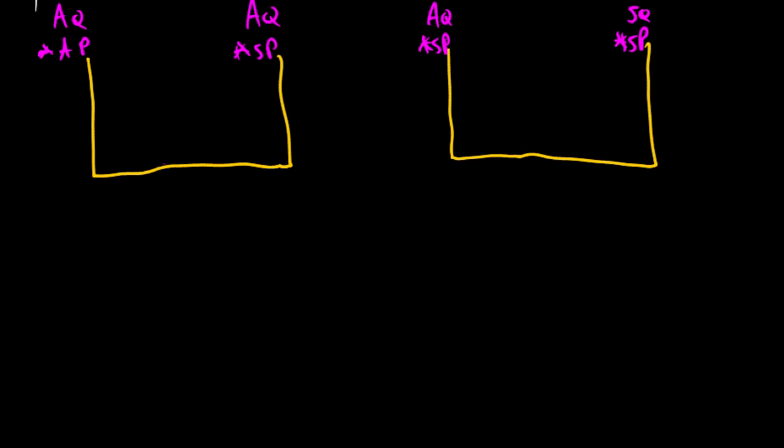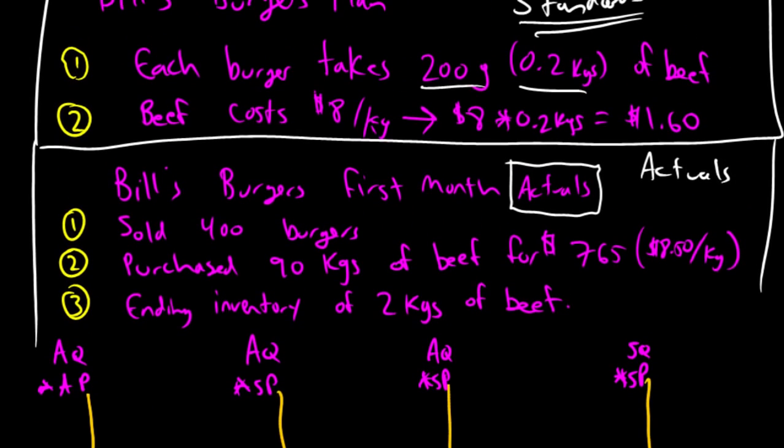Now, what do these stand for? AQ stands for actual quantity, as in actual quantity of direct materials. So, this is always going to be measured in kilograms, or grams, or pounds, or liters, or ounces. It's a unit of measure. AP is the actual price we paid per unit, so per kilogram in this case. SQ is the standard quantity, and SP is the standard price that we should have paid. So, let's try to fill this in for our company, and I think by the end, you'll have a pretty good measure of how to do variances.